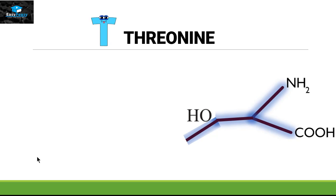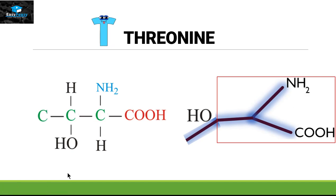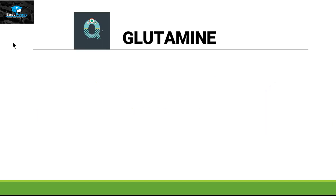To make the threonine structure officially, we take this fork structure and place it here. The beta carbon is attached with another carbon as well as OH, so this H is replaced by OH. This carbon makes another bond with the next carbon, and that carbon makes three bonds with hydrogen. This is the official structure for threonine.